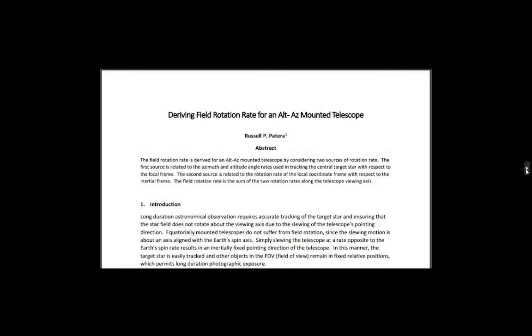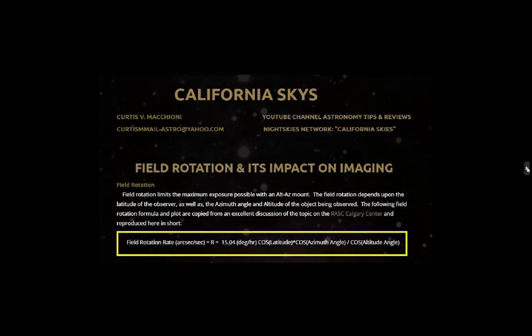The formula that we will look at momentarily was derived by Russ Patera in 2022, fairly recently, in a paper on 'Deriving Field Rotation Rate for an Alt-Az Mounted Telescope.' California Skies — Curtis Maccioni — put that formula in a very elegant way, and we're going to take a look at that formula.